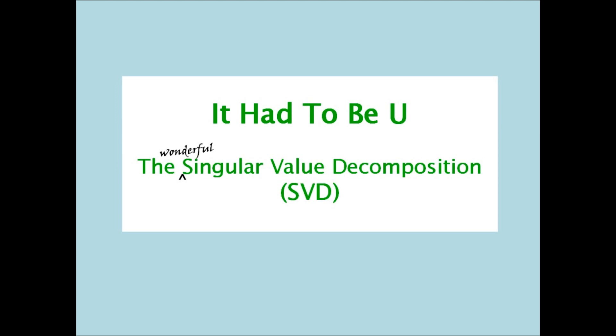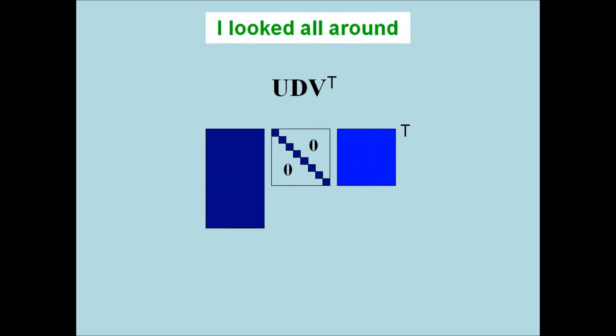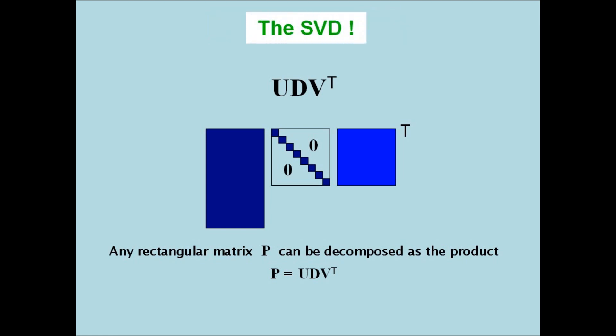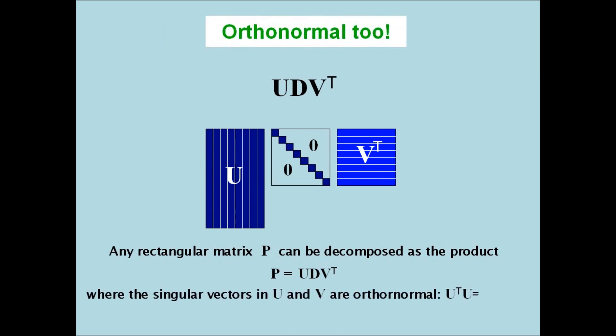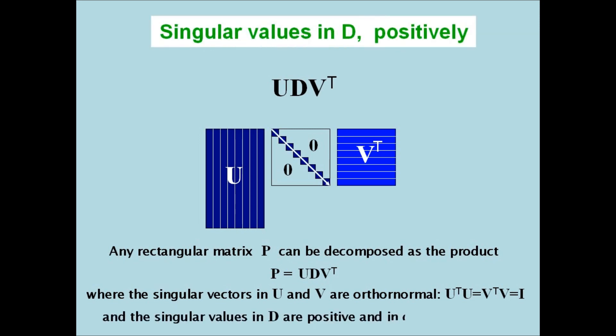It had to be U, D transpose V. I looked all around and finally found the SVD. Singular vectors in V and U, orthonormal too. Singular values in D, positively,